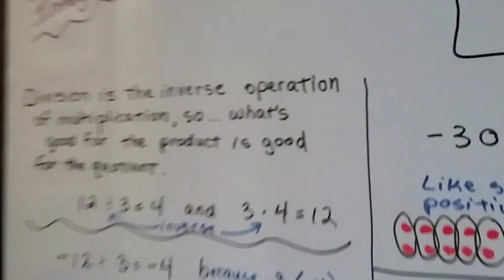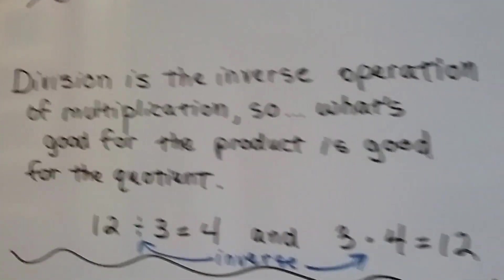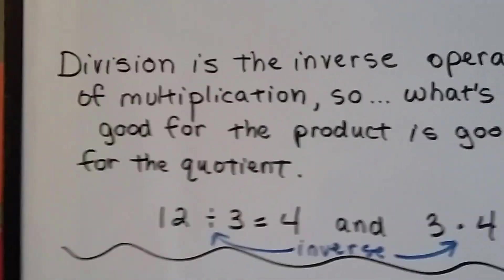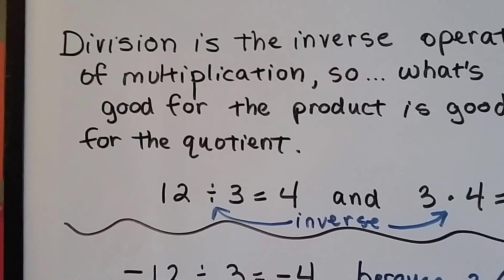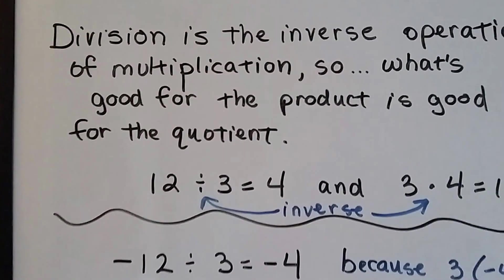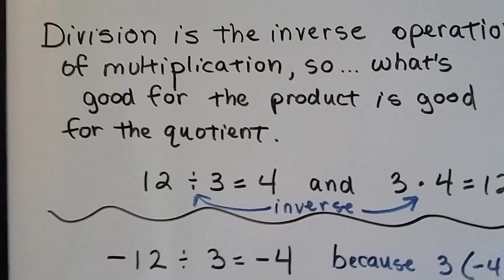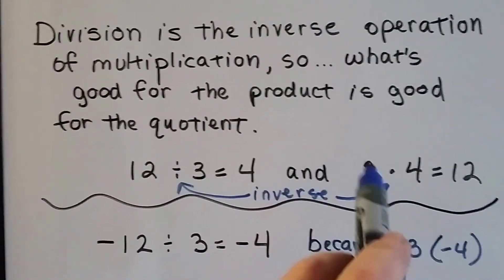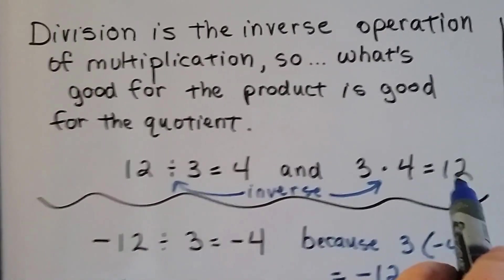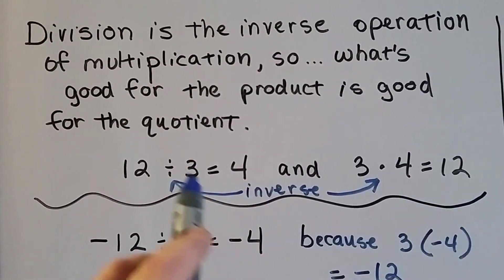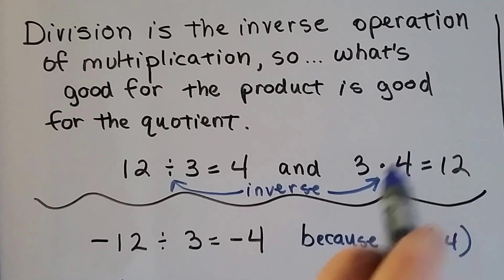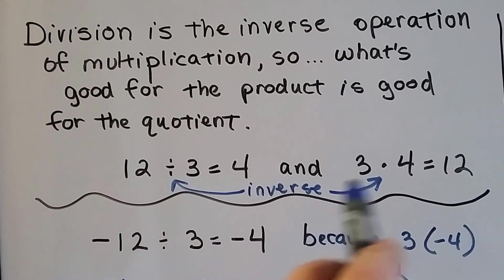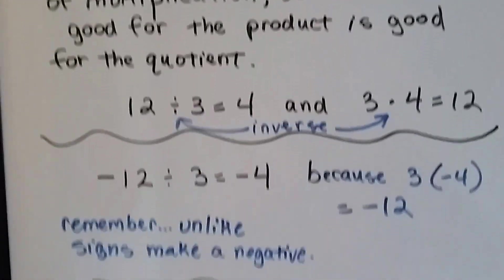Division is the inverse operation of multiplication, so what's good for the product is good for the quotient. 12 divided by 3 equals 4, and it's the inverse of 3 times 4 equals 12. Division and multiplication are inverse operations.